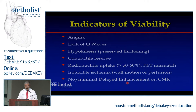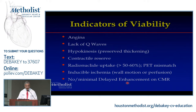These are the indicators of viability. Angina — if an individual has angina, you have viability. The question is the angina distribution relative to normal versus abnormal function. Lack of Q waves in somebody who has regional or global dysfunction and coronary disease. Hypokinesis by itself tells you there is some thickening, some viability. Contractile reserve — we'll talk about that with dobutamine. Radionuclide uptake greater than 50 or 60 percent by thallium or others.